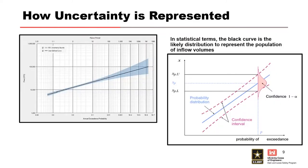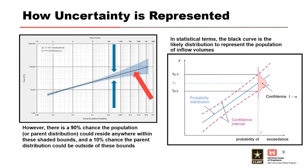I want to define how uncertainty is represented on the plots we use. The flow frequency curves used in RFA display a user input curve, the black curve, and a confidence interval shaded in blue. In statistical terms, the black user input curve is the likely distribution to represent the population of inflow volumes. However, there is a 90% chance that the parent distribution truly resides within the shaded bounds, and a 10% chance it could be outside these bounds.